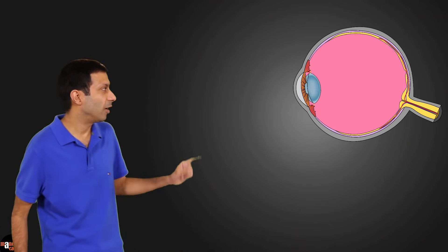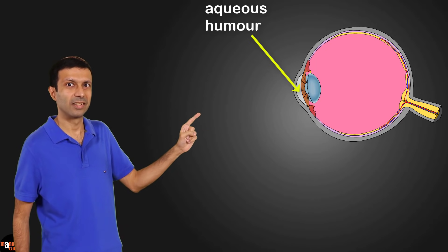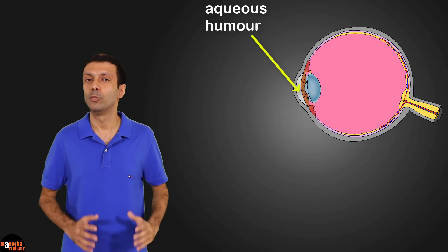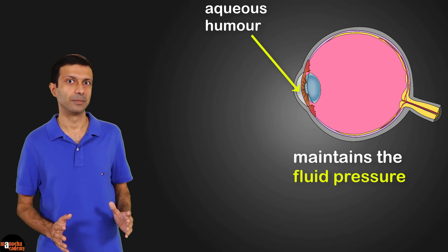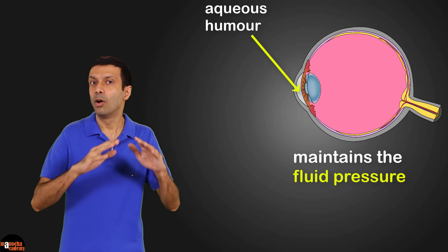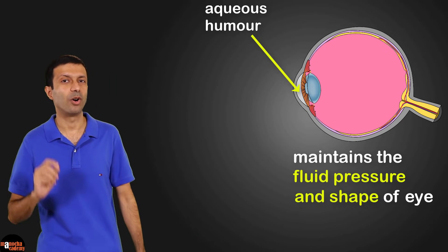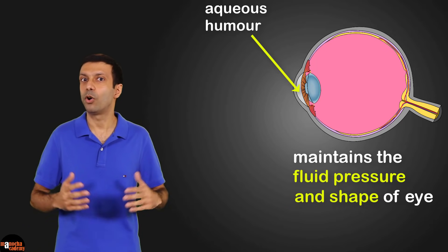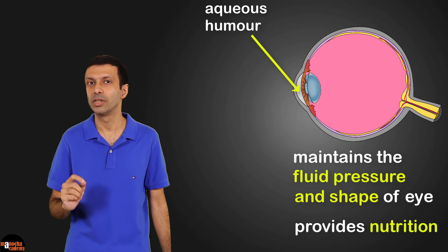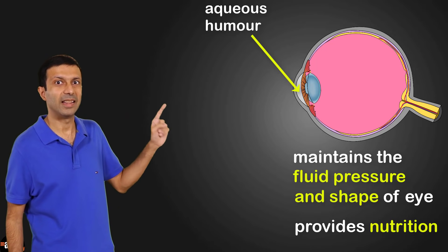There is a liquid in the front part of the eye between the cornea and the eye lens called the aqueous humor. Its function is to maintain the fluid pressure inside the eye — this hydrostatic pressure keeps the walls of the eyeball tight and maintains the roughly spherical shape of the eye. The aqueous humor also provides nutrition, such as amino acids and glucose, to various parts of the eye like the cornea and the eye lens.